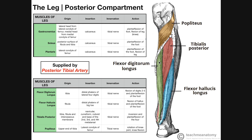Now let's look at tibialis posterior — the medial one. It actually lies between flexor digitorum longus and flexor hallucis longus, here in red. This has its origin on the tibia, the fibula, and actually the interosseous membrane. The tibia and fibula, like the radius and ulna in the arm, are physically connected by a joint called an interosseous membrane — basically a bundle of fibrous connective tissue that joins the two bones and keeps them from separating. Its insertion is on the cuneiform, the cuboid, and the base of the second, third, and fourth metatarsals.